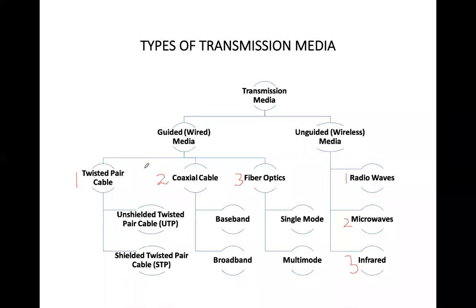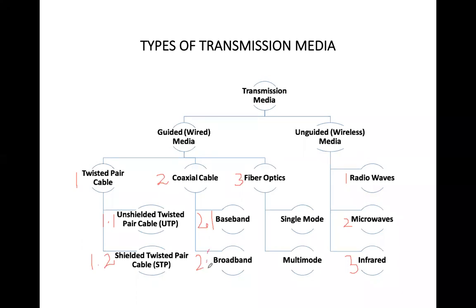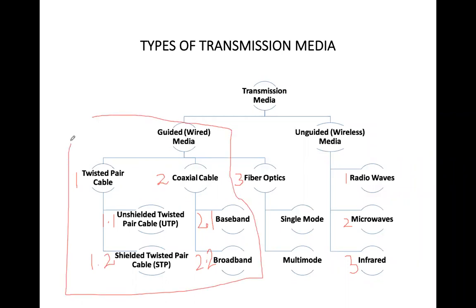The twisted pair cable is further divided into unshielded twisted pair and shielded twisted pair cable. Coaxial cable is further divided into baseband and broadband, and fiber optics can be single mode or multi-mode. Today we will be discussing wired media — specifically twisted pair cable and coaxial cable and their sub-categories.